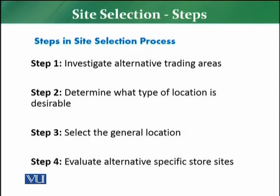Step number one is to investigate alternative trading areas. In site selection, you need to investigate different alternative trading areas — trading area one, trading area two, trading area three. For example, if Walmart wants to come to Pakistan, Lahore, Karachi, Islamabad, Multan, and Peshawar are all open. They can identify different trading areas and different sites. In the first step, you need to identify multiple different alternatives so that you have the best option to proceed with.